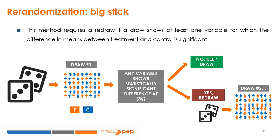The big-stick re-randomization method was proposed by Suarez and Wu in 1985. This method requires a redraw if a draw shows at least one variable for which the difference in means between treatment and control is significant. The first step is to run a single random draw, then test for the difference in means for each important covariate to see if any show a significant difference at the 5 or 10% level. If there is no significant difference, the allocation is kept. If there are any significant differences, a new draw is made and the process is repeated until a balanced allocation arises.